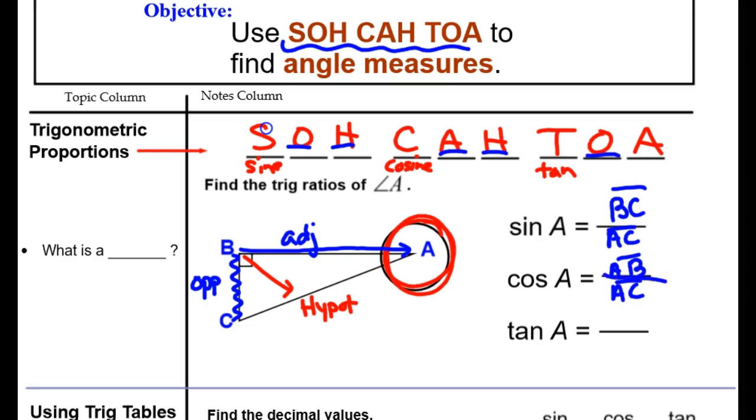And then for the tangent, we take the opposite over the adjacent. The opposite is the B-C, and the adjacent is the A-B. When they ask for ratios, we are just making these fractions according to the triangle that's been given to us.